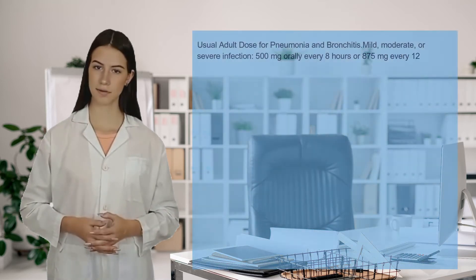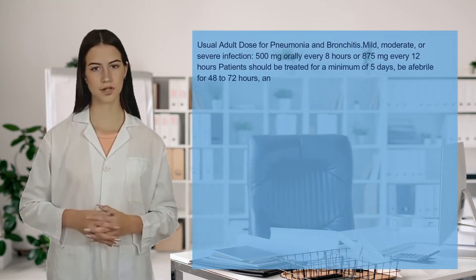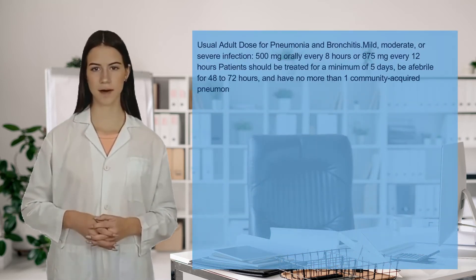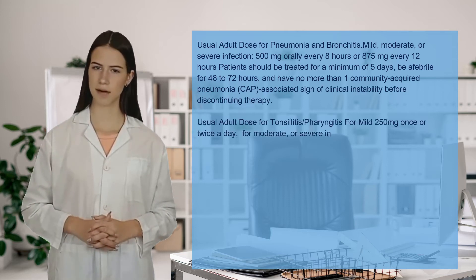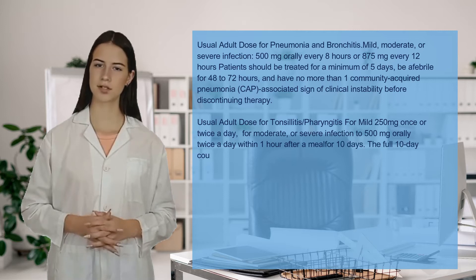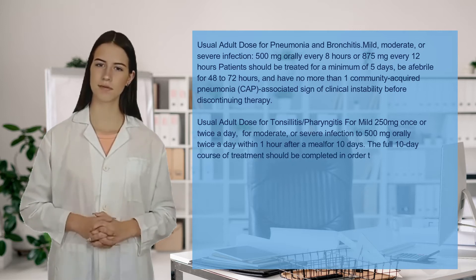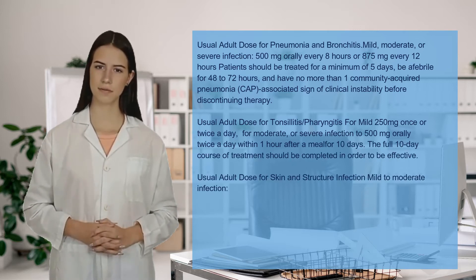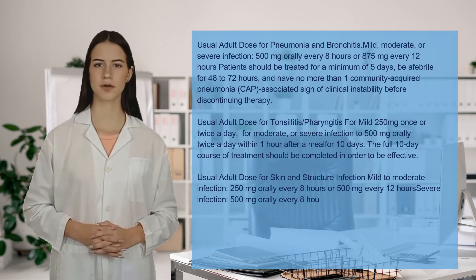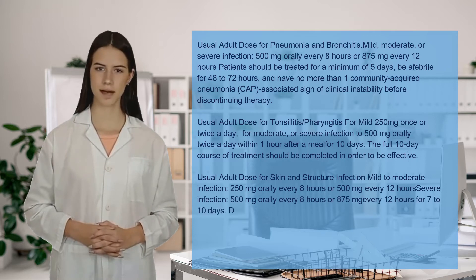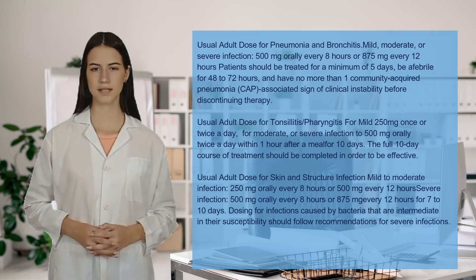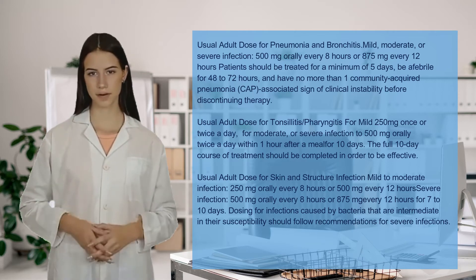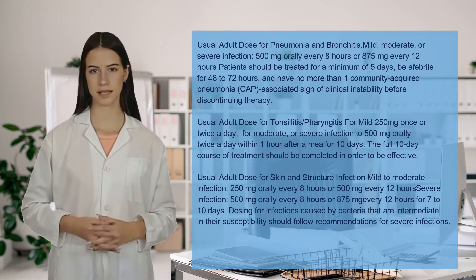Usual adult dose for pneumonia and bronchitis. Mild, moderate, or severe infection: 500 mg orally every 8 hours or 875 mg every 12 hours. Patients should be treated for a minimum of 5 days, be afebrile for 48 to 72 hours, and have no more than one community-acquired pneumonia (CAP)-associated sign of clinical instability before discontinuing therapy.